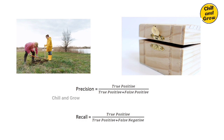If you dig in a spot and find a treasure, that is a True Positive. If you dig in a spot but there is no treasure — you got a positive signal but it was wrong — that is a False Positive. Precision means: of all the spots where the device beeped, how many actually had treasure? That is True Positive divided by True Positive plus False Positive. Recall means: did you miss any treasure? Missing a treasure is a False Negative. Recall is True Positive divided by True Positive plus False Negative.